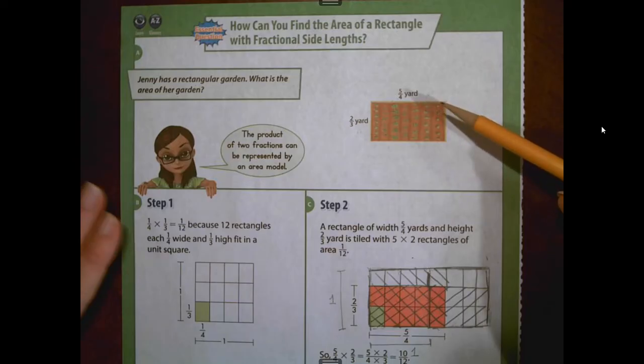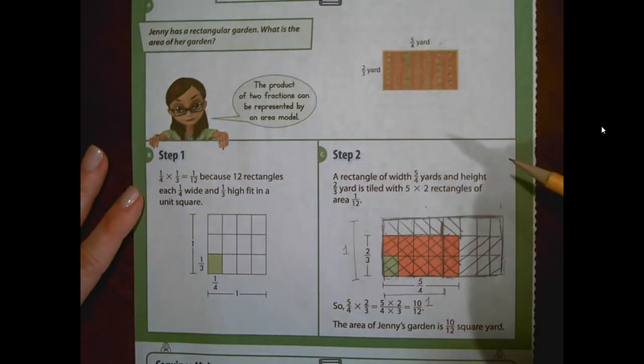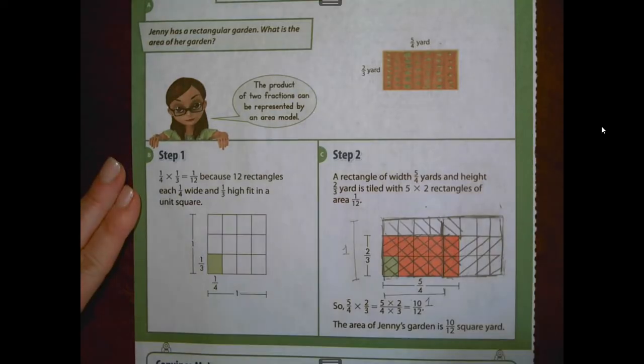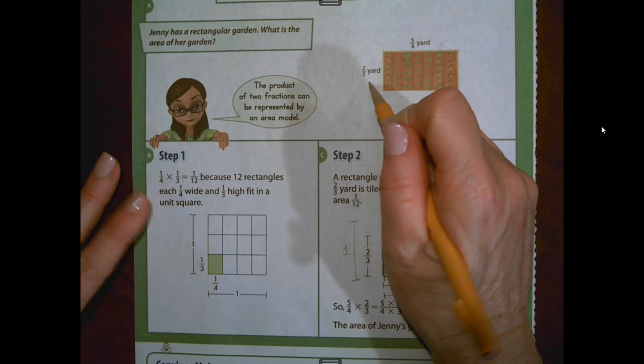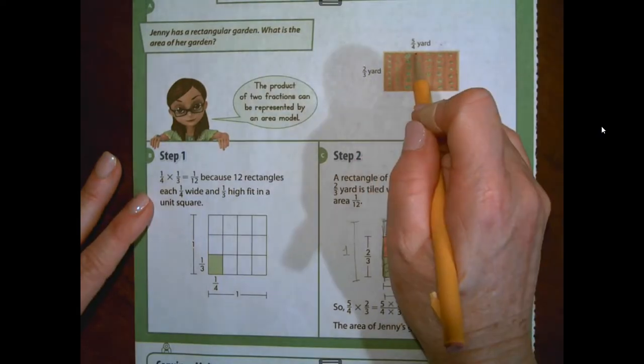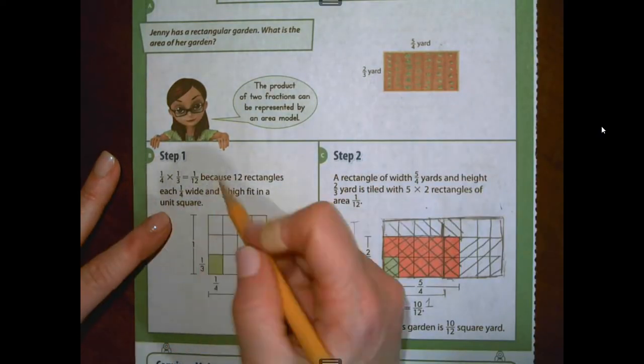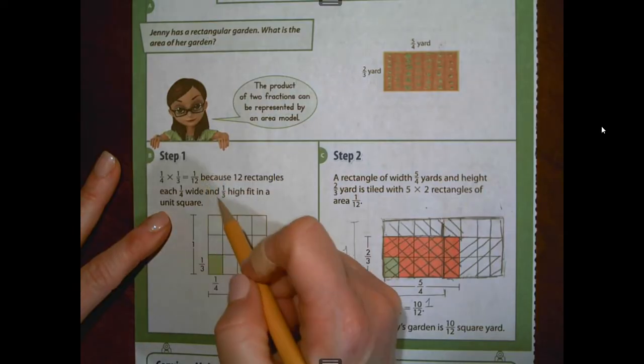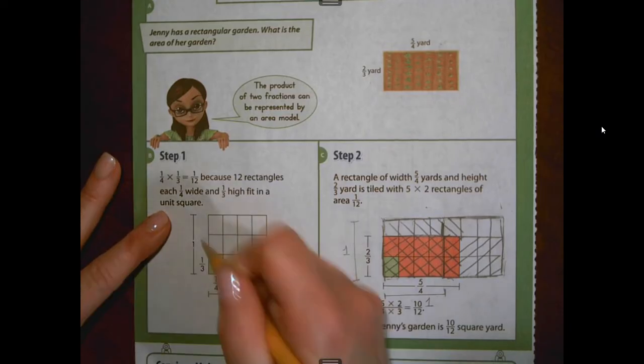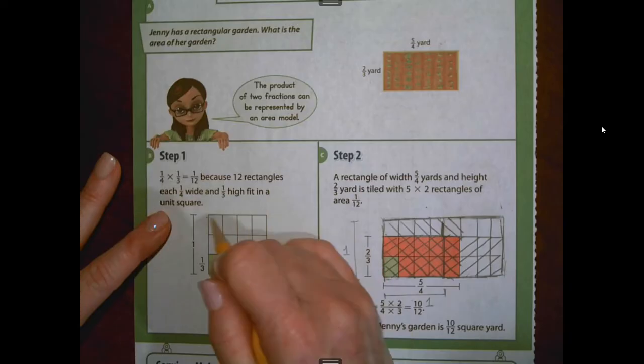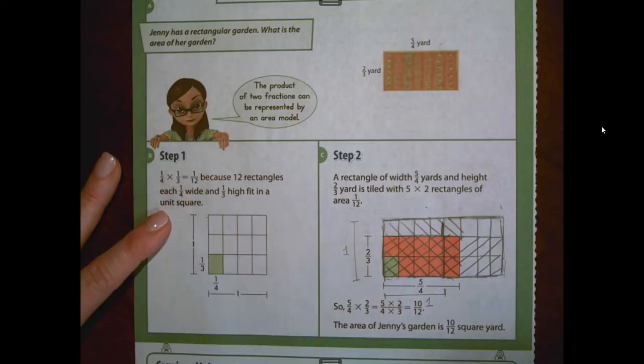One whole would be four-fourths. So in order to model this, it's a little bit different. So we are going to, first of all, have to figure out how many squares are in one whole. So if you look at your unit fractions, you would have one-third and one-fourth. So when we multiply those together, we would have 12 rectangles. Each one would be represented as one-twelfth. So that's how many we know we need in one whole unit. We need 12 rectangles of equal size.